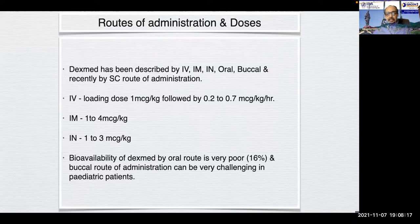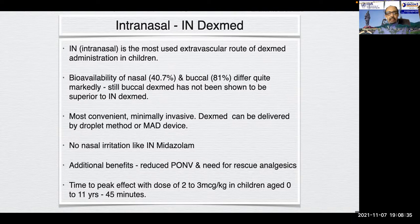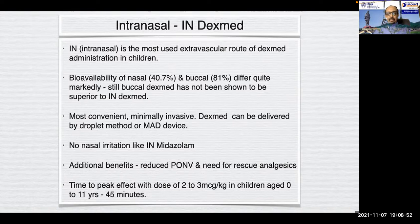The buccal route of administration can be very challenging in pediatric patients. The intranasal route needs special mention as it is the most used extravascular route in children. Bioavailability by nasal route is around 40.7% and by buccal route 81%, differing quite markedly, but the buccal route has not been shown to be superior to intranasal. Intranasal dexmedetomidine is the most convenient, minimally invasive, and can be delivered by droplet method or mucosal atomizer devices. Time to peak effect with a dose of 2 to 3 mcg/kg in children aged 0 to 11 years is around 45 minutes.